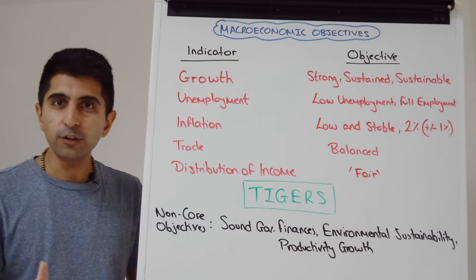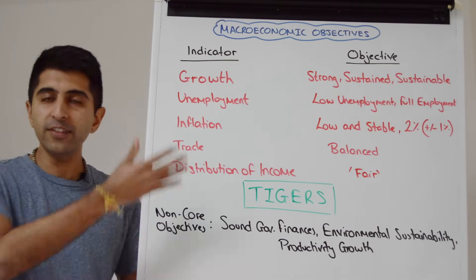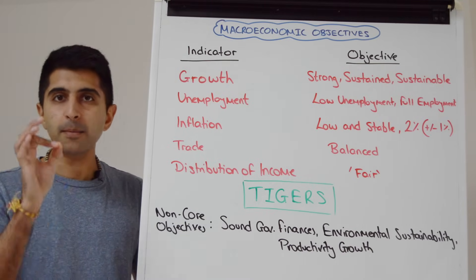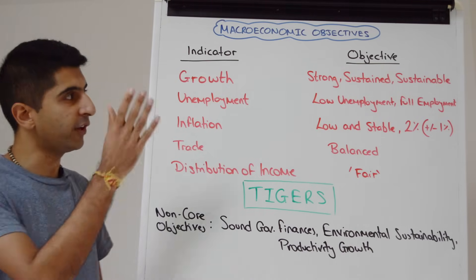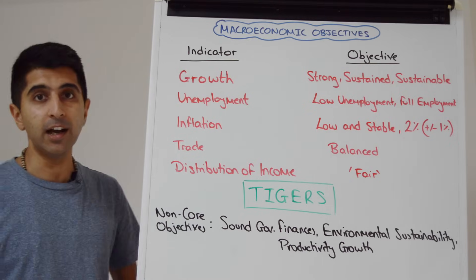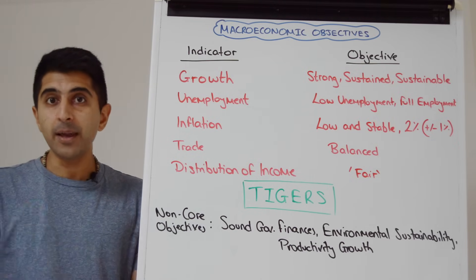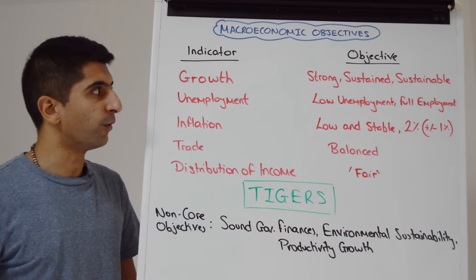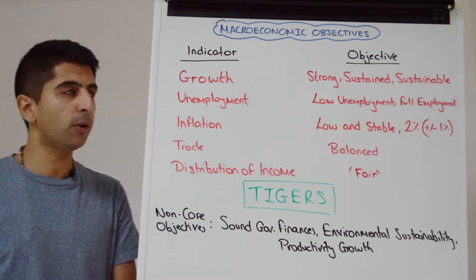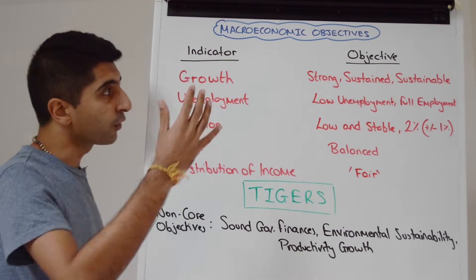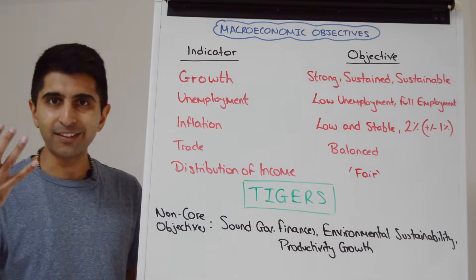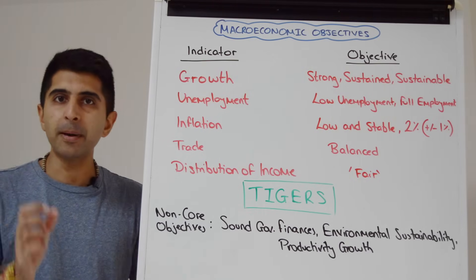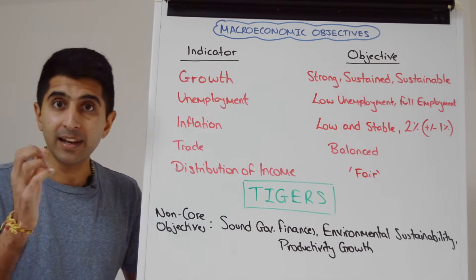Economists and politicians don't just look at these indicators — there will be specific government macroeconomic objectives for each indicator, and what we want to see is whether those objectives are being met. So let's take economic growth. The objective when it comes to economic growth is for growth to be strong, sustained, and sustainable. And remember, growth is a measure of incomes and living standards.